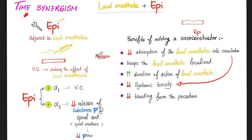Do you remember the phenomenon of synergism? Adding local anesthetic and epinephrine together. Why add epinephrine? It's a vasoconstrictor — it decreases substance P release (reducing pain), decreases absorption of local anesthetic (keeping it localized and extending duration), reduces systemic toxicity, and reduces bleeding from the procedure.